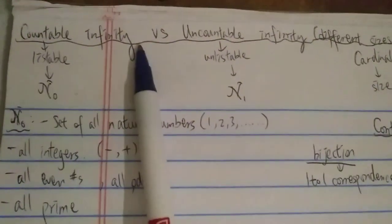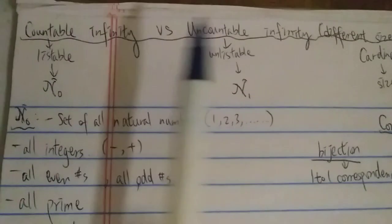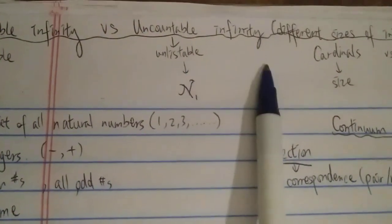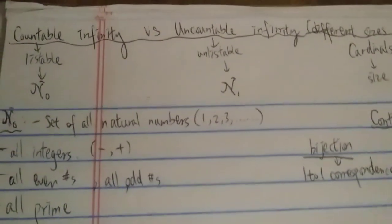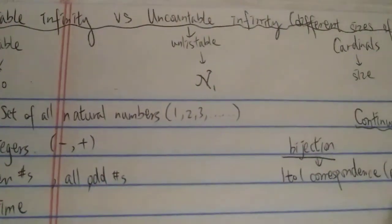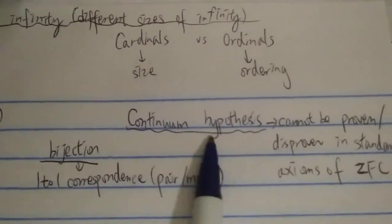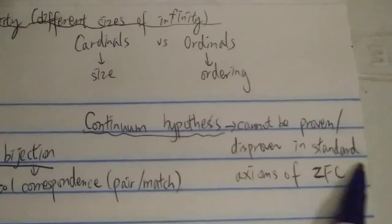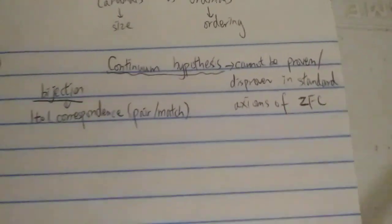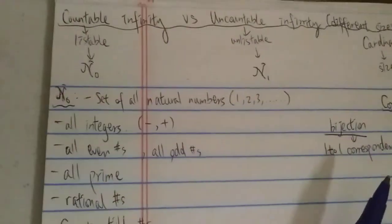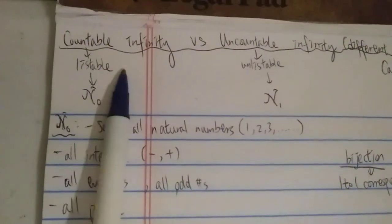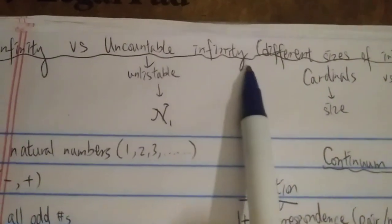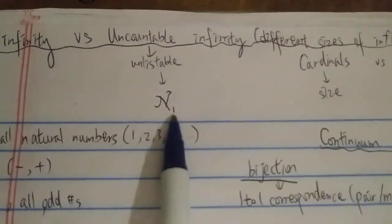Countable infinity — some people call that listable infinity because you can list them out one by one. The second type is uncountable infinity, or unlistable infinity, because you cannot list them out one by one. In this video, we're going to assume the continuum hypothesis is true, because it cannot be proven or disproven in the standard ZFC axioms. Listable infinity or countable infinity is represented by ℵ₀, and unlistable infinity is represented by ℵ₁.